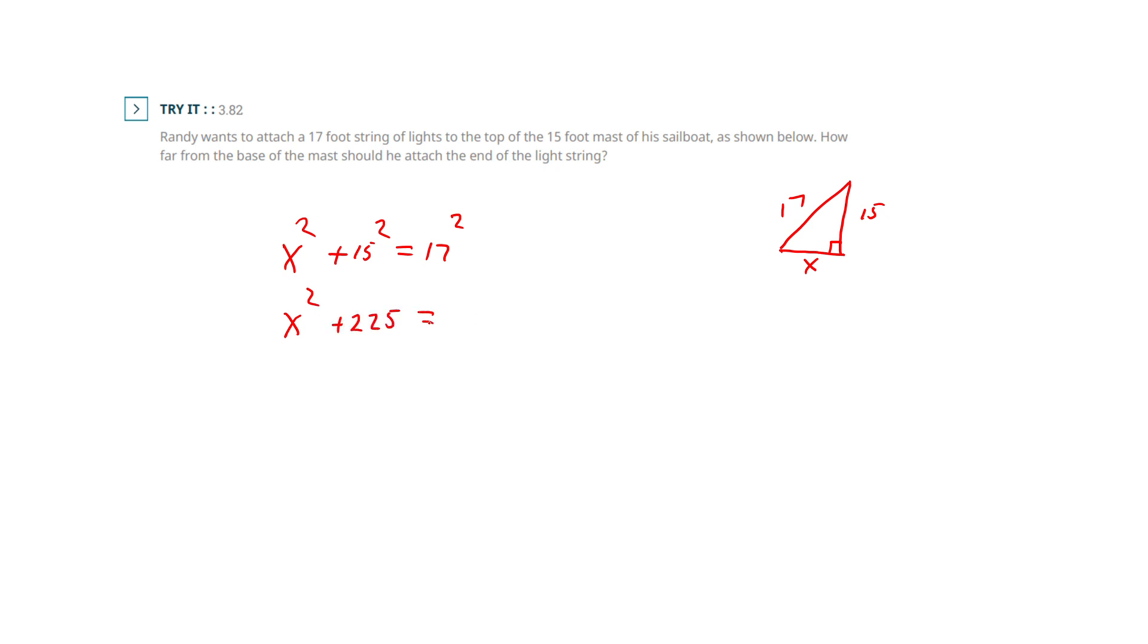I just did 17 squared. I don't remember. 289. Okay. Now we're going to isolate the x squared. Now I would square root both sides. I get x is 8. So this must have been 8 feet away.